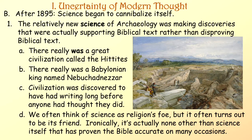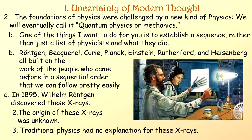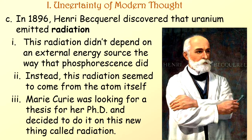The foundations of physics were challenged by a new kind of physics — we would eventually call it quantum physics or quantum mechanics. To establish a sequence: Röntgen, Becquerel, Curie, Planck, Einstein, Rutherford, and Heisenberg all built on the work of the people who came before in a sequential order. In 1895, Wilhelm Röntgen discovered X-rays, the origin of which was unknown — traditional physics had no explanation for them. In 1896, Henri Becquerel discovered that uranium emitted radiation, and this radiation didn't depend on an external energy source the way phosphorescence did; instead, the radiation seemed to come from the atom itself.